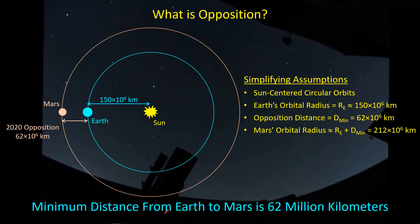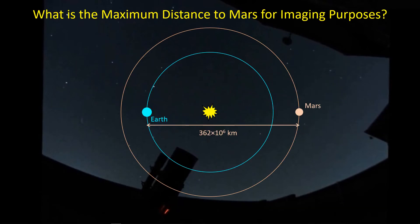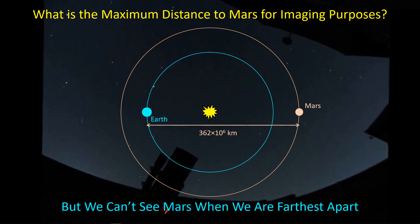The minimum distance to Mars right now is 62 million kilometers. From an imaging perspective, what is the maximum distance to Mars? Well, physically, at least according to this simple model, Mars can be as much as 362 million kilometers away. However, we can't really see Mars because the Sun is right in the way — if you're looking toward Mars, you're looking through the Sun. So you're not going to see Mars when it's at its farthest point.